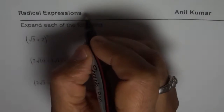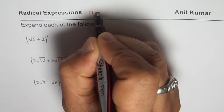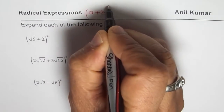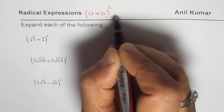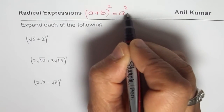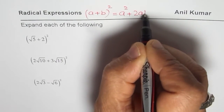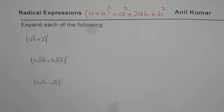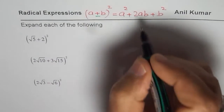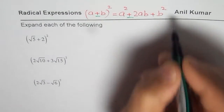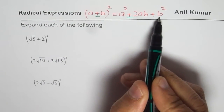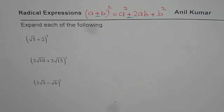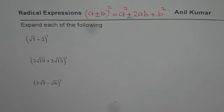What you have learned is (a + b)² equals (a + b) times (a + b), and the result is a² + 2ab + b². If we have (a - b), in that case the sign is minus, so it becomes a² - 2ab + b². We will apply this formula to expand all of them.